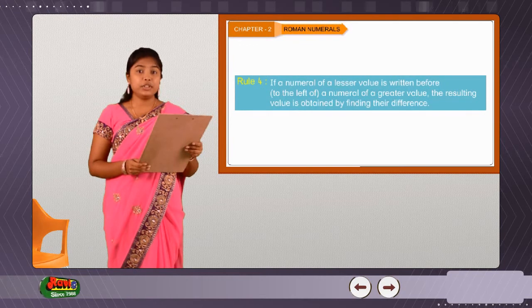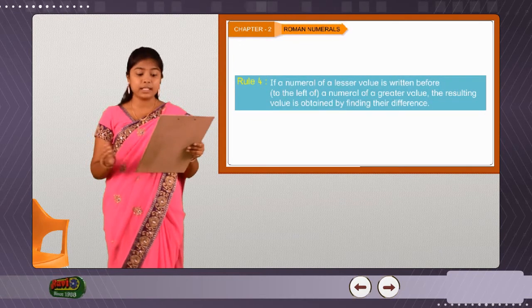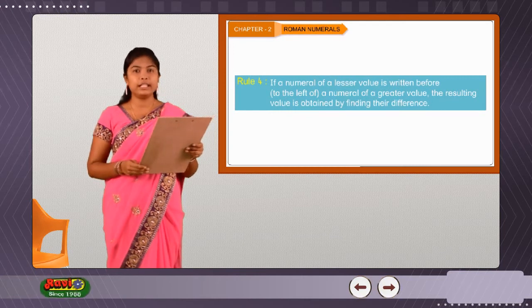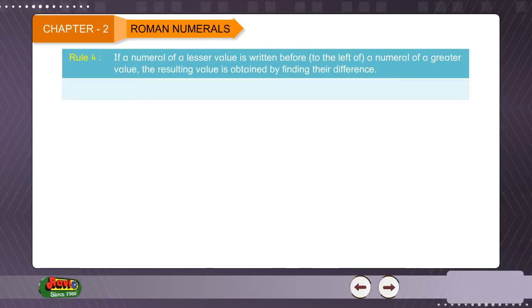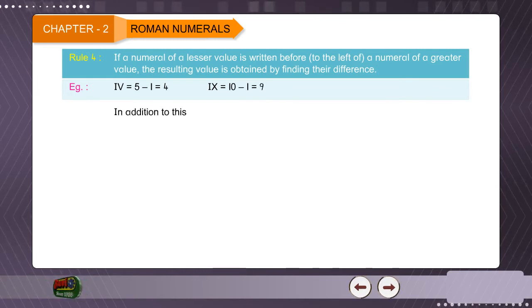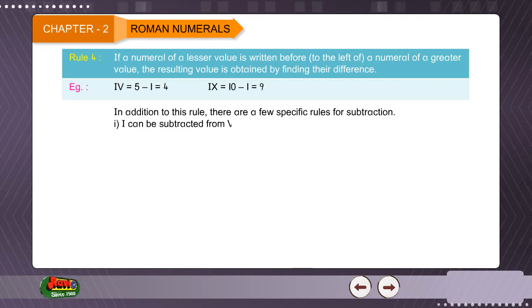Rule 4: If a numeral of a lesser value is written before, to the left of a numeral of a greater value, the resulting value is obtained by finding their difference. Example: IV equals 5 minus 1 equals 4, IX equals 10 minus 1 equals 9. In addition to this rule, there are a few specific rules for subtraction. 1. I can be subtracted from V and X only. 2. V can never be subtracted.